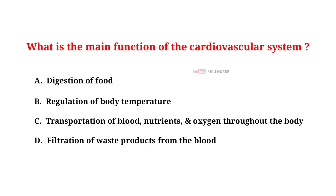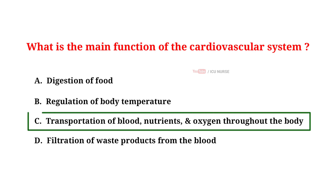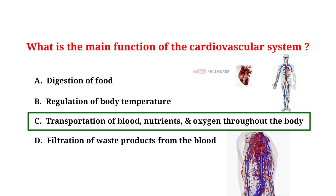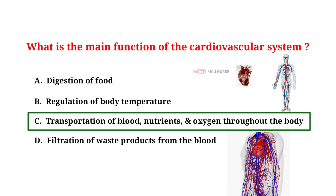What is the main function of the cardiovascular system? A. Digestion of food. B. Regulation of body temperature. C. Transportation of blood, nutrients and oxygen throughout the body. D. Filtration of waste products from the blood. And the correct answer is C. Transportation of blood, nutrients and oxygen throughout the body. The main function of the cardiovascular system is the transportation of blood, nutrients and oxygen throughout the body.